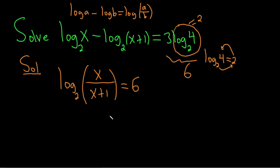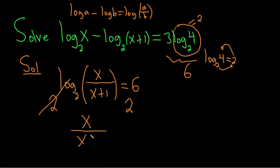In order to solve for x, we have to get rid of this log. We can exponentiate both sides — put a 2 here and a 2 here, and these cancel because the bases match. So we're left with x over x plus 1 equals 2 to the 6, which is 64, because 2 to the 5th is 32 and 2 to the 6th is 64.